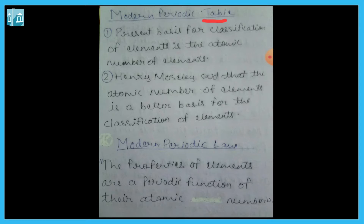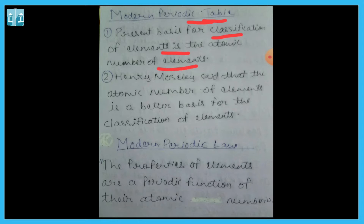Now let's start the next and most important part: the Modern Periodic Table. What is the Modern Periodic Table? What was its purpose and how were elements classified? Today, the classification of elements is based on atomic number. Remember that after the Modern Periodic Table, there is no other table — this is what we follow now, and it works on the basis of atomic number.